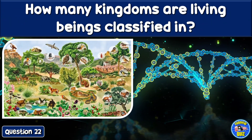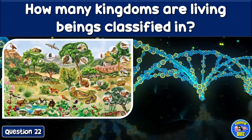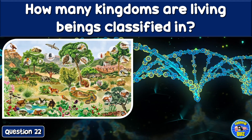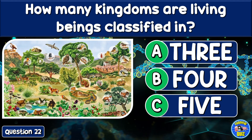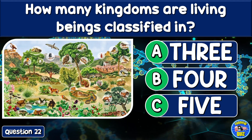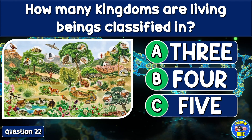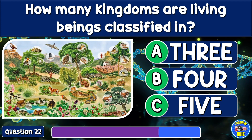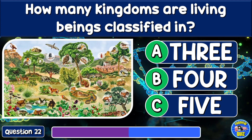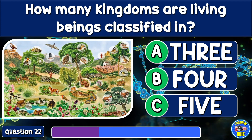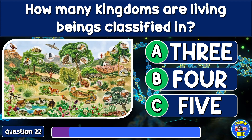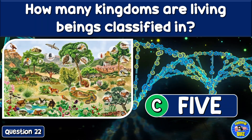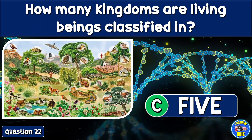How many kingdoms are living beings classified into? Three, four, or five? Five.